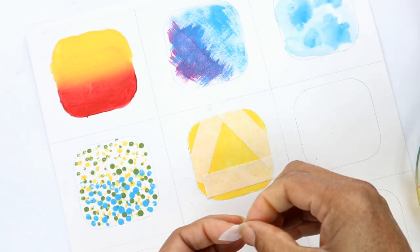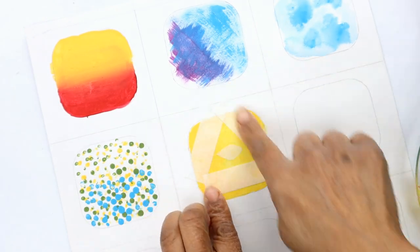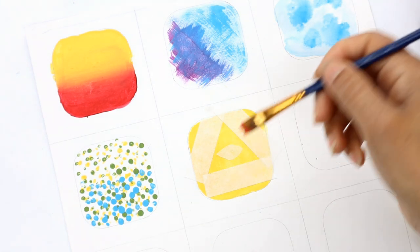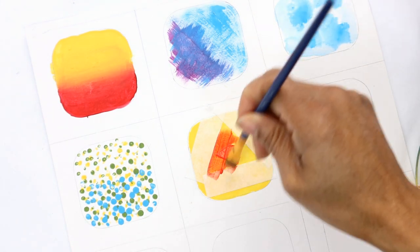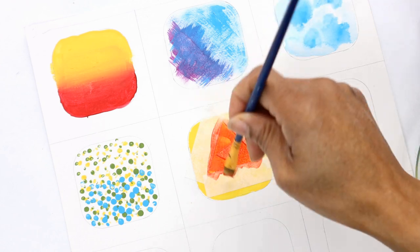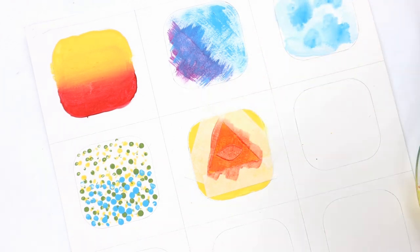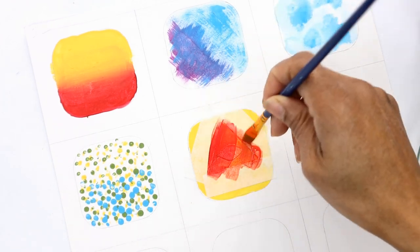And add another layer of paint in a different color. Once it's dry I'm going to carefully peel away the masking tape to reveal the design underneath.